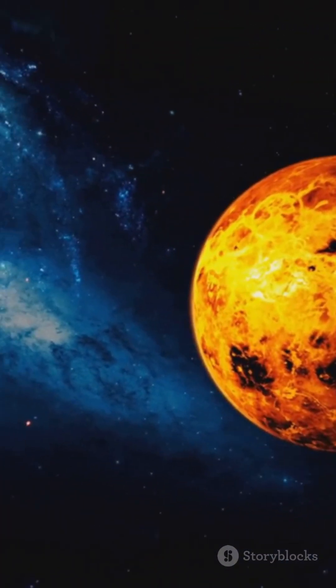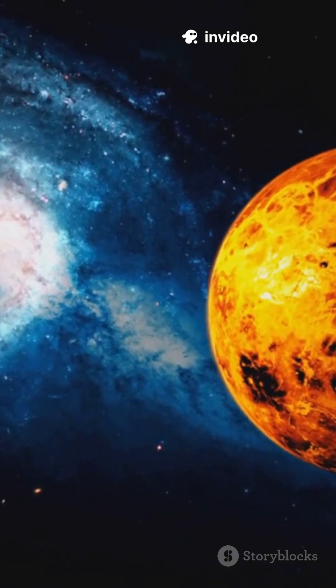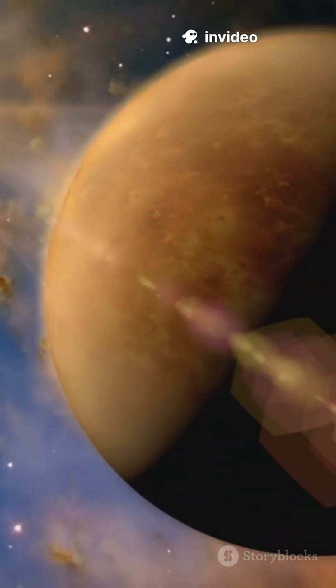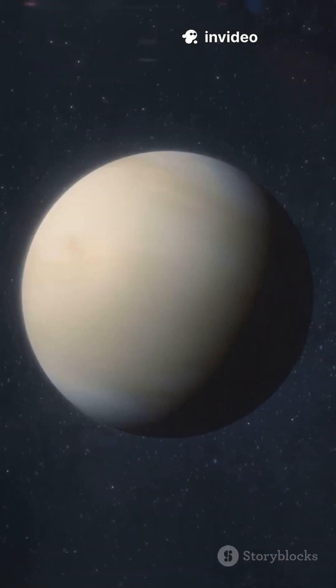So if you were standing on Venus and could survive the heat and pressure, you'd see a super slow-motion sunrise in the wrong direction.